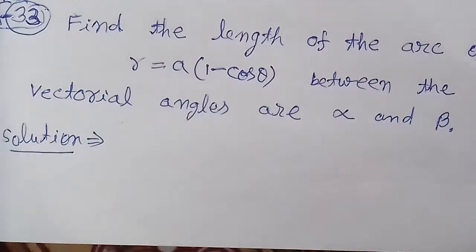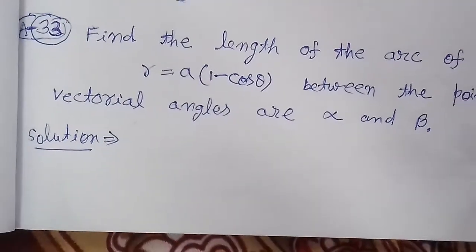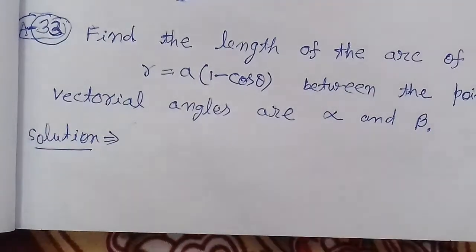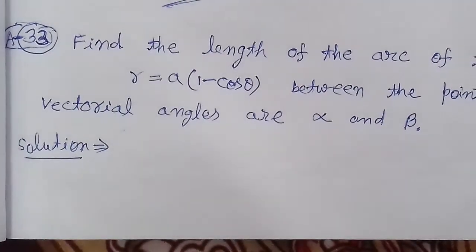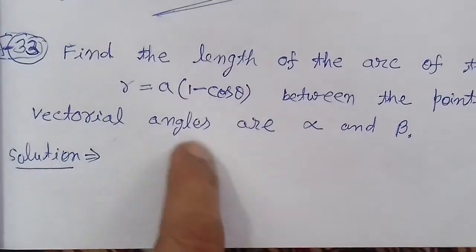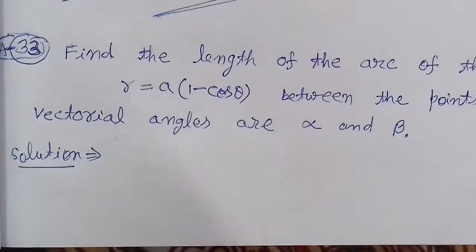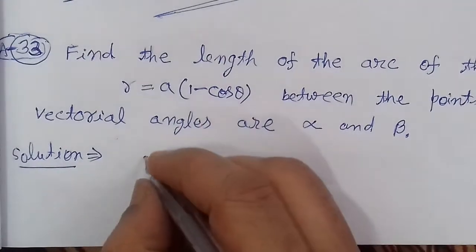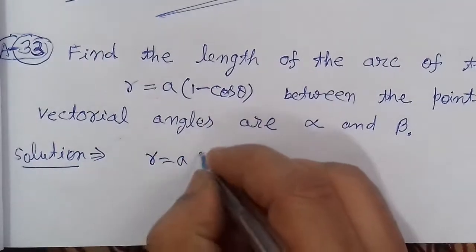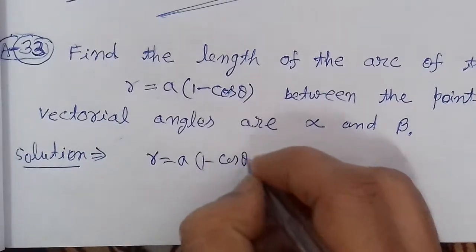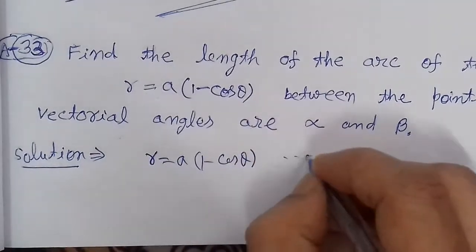a(1 - cos θ) between the points whose vectorial angles are α and β. So first, the curve given to us is r = a(1 - cos θ). This is equation number 1.